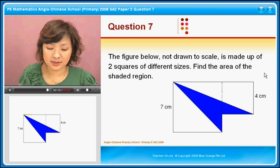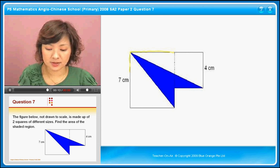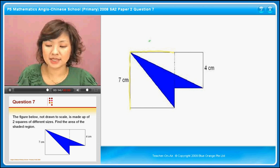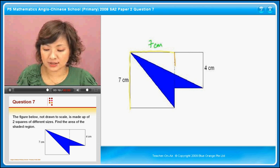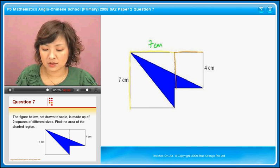Can you find the squares? This is one of them. Can you see the square? So this tells us that this side is also 7cm. There's another square, which is this one. This tells us that this side is 4cm.